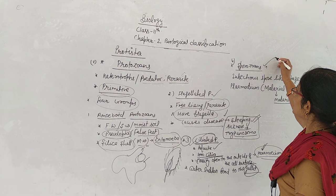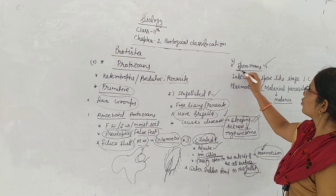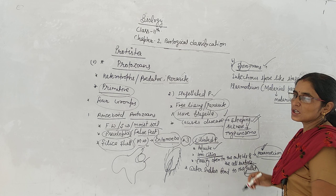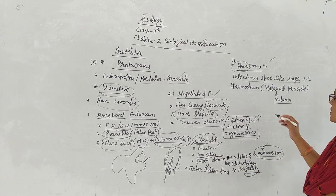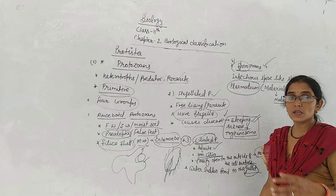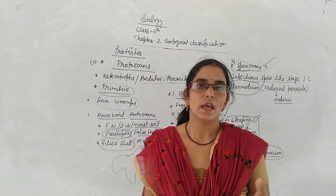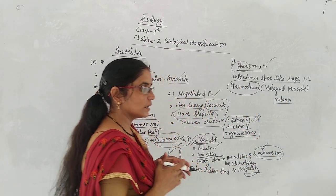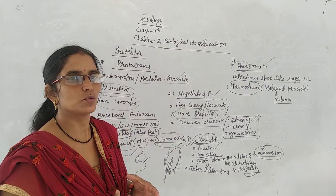The last and fourth group is sporozoans. They have an infectious spore-like stage. Plasmodium is called the malarial parasite. If you remember the malaria life cycle, both the human host and the mosquito vector are involved.